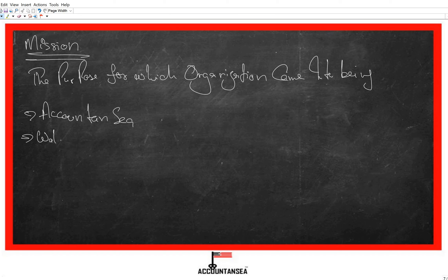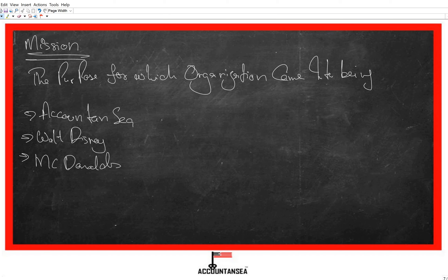Walt Disney's purpose was to provide quality cartoons so that children can enjoy and be entertained. Why did McDonald's come into being? Before McDonald's, there were lots of fast food restaurants but they were all messy and crowded. McDonald's purpose — as you can see all over the world — was that people come, eat, throw the trash themselves, and go. A formal system in a fast food chain. That was McDonald's aim.